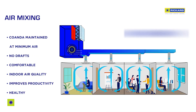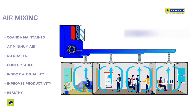When VAV diffusers close under low load conditions, the geometry is changed to match the load. In this way the velocity is not lost and Coanda air mixing and comfort is maintained to ensure happy, comfortable occupants.